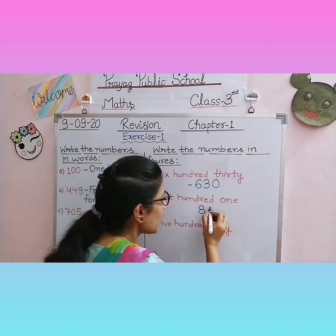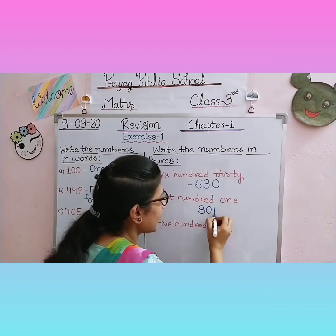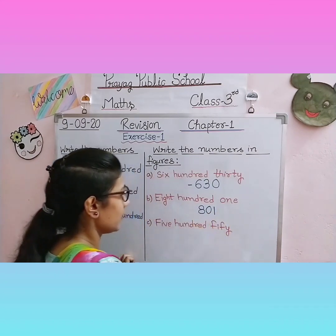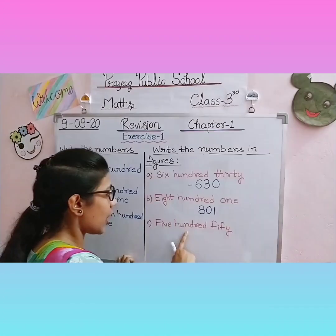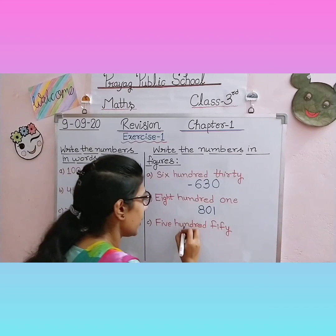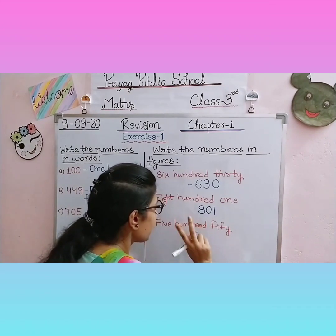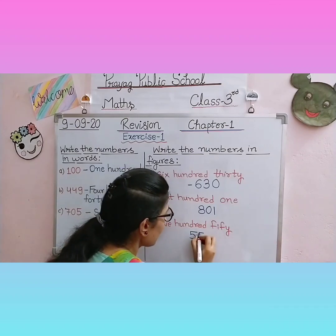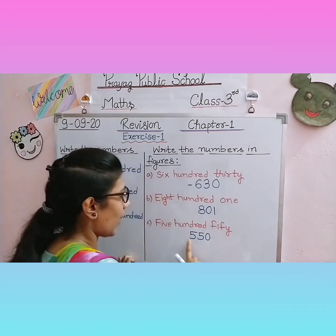That means we will write zero in the tens place, and one in the ones place. How will we read it? Eight hundred one. Now the last question: five hundred fifty. Five goes in the hundreds place, and fifty — fifty has two digits: tens and ones. So we write fifty. Five hundred fifty.